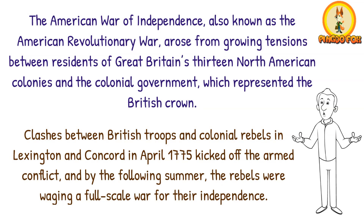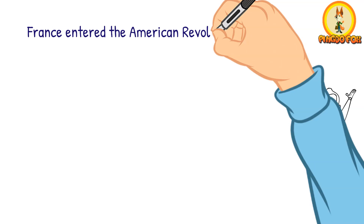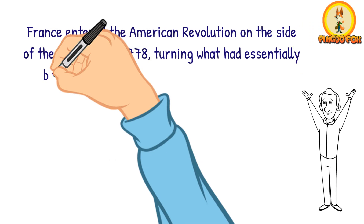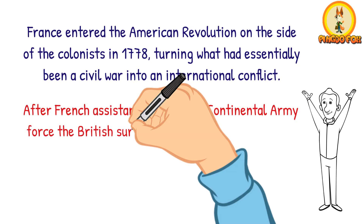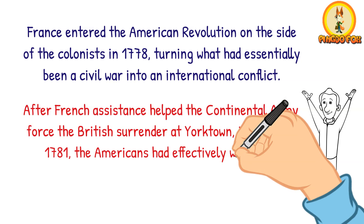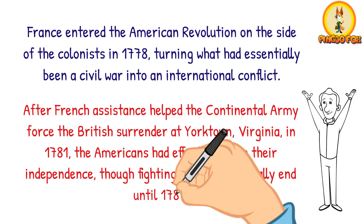France entered the American Revolution on the side of the colonists in 1778, turning what had essentially been a civil war into an international conflict. After French assistance helped the Continental Army force the British surrender at Yorktown, Virginia, in 1781, the Americans had effectively won their independence, though fighting would not formally end until 1783.